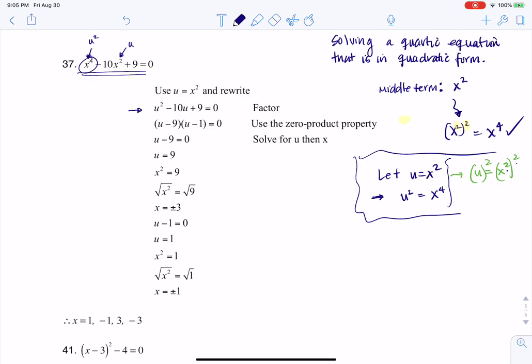So instead of writing x to the fourth, let's write u squared. Instead of writing negative 10x squared, let's write negative 10u. Now 9 in and of itself, it has no variables in it. It's a constant, and that's why it stays a constant. All right, and then once you're here, you can see now I do have a quadratic equation. I have a quadratic equation with u's in it, but I still have a quadratic equation.